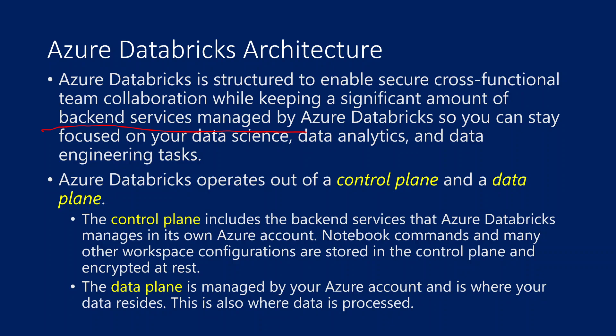You only create the Databricks account and directly focus on writing your notebooks to perform big data processing. Because of this, Azure Databricks operates on two things: something called the control plane and something called the data plane. These are the two areas contained in the Azure Databricks architecture. The control plane is where Databricks handles all the backend services. It contains all your notebooks, metadata, workspace configurations, how you schedule your notebooks using jobs — all that information is stored in the control plane.